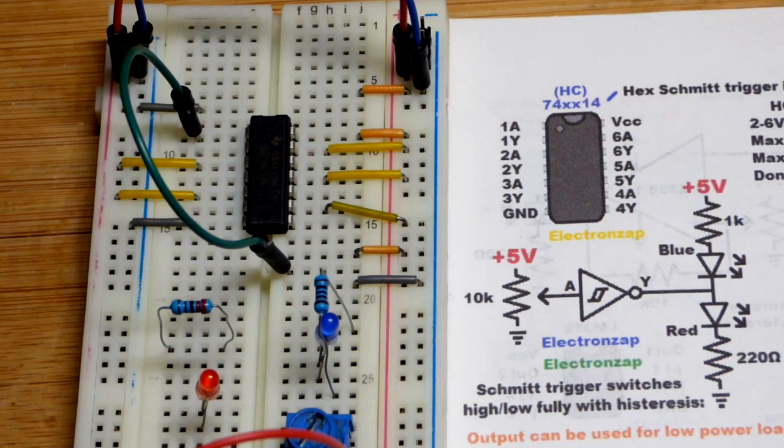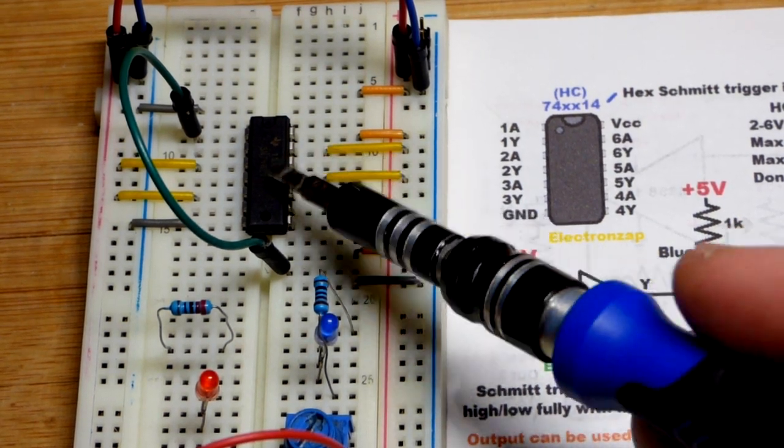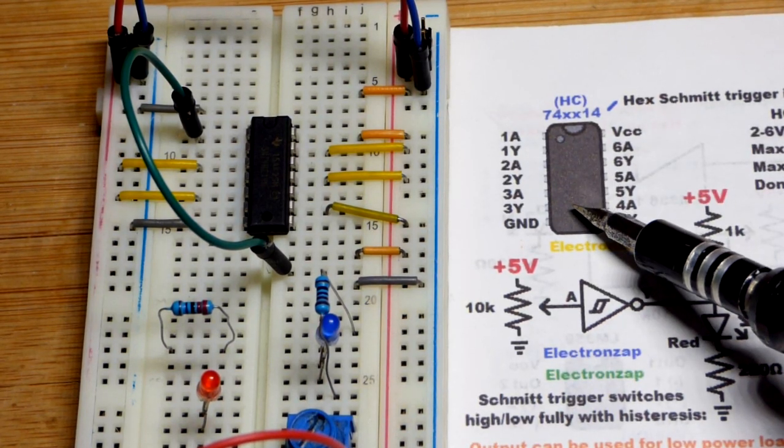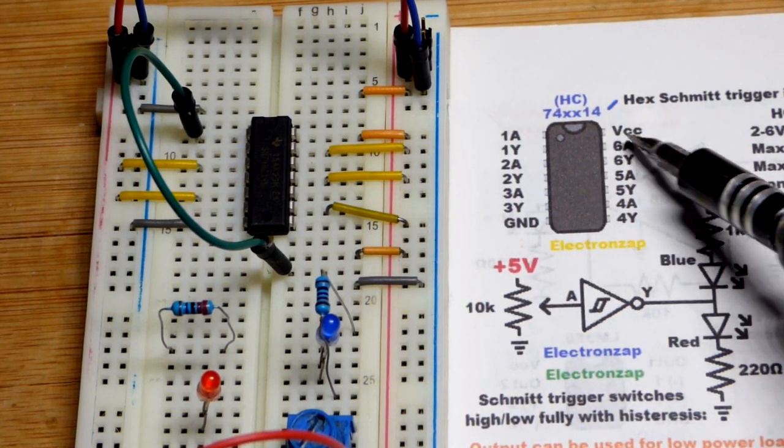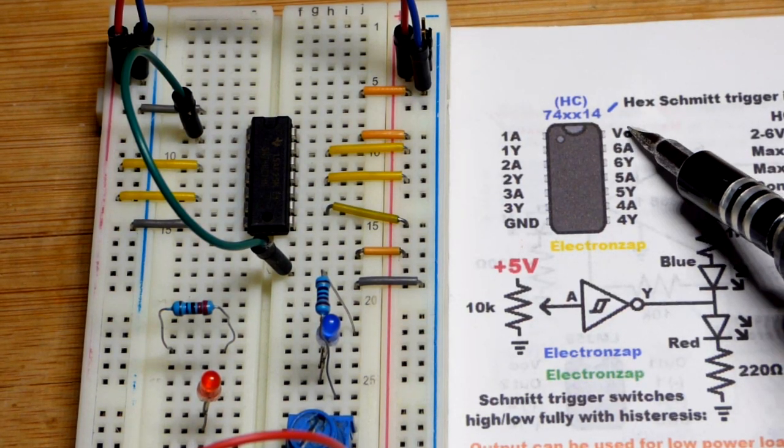Now of course before you build the circuit, you want to check the data sheet. I haven't done that in a long time, I'm just going from the diagram I drew out here, but always check the data sheet for yourself. You have to power the integrated circuit, of course: positive supply to pin 14 right there.